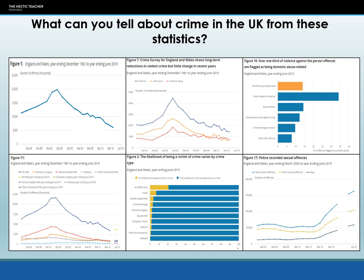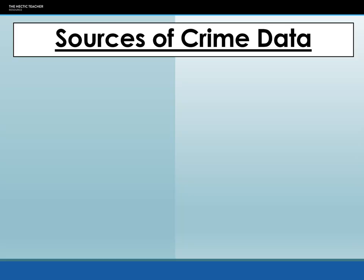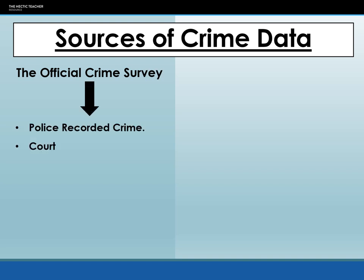Let's focus on where these statistics come from — the sources of crime data. The first source is the official crime survey, sometimes called the official crime rate — same thing, different name. It is compiled through police recorded crime, court records and prison records. It is published quarterly by the Office of National Statistics, but the data itself is collected by the Department of Justice.